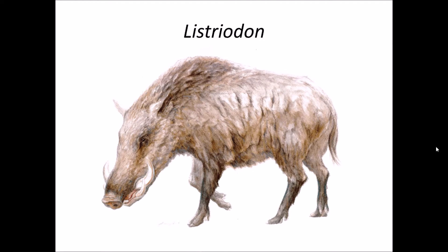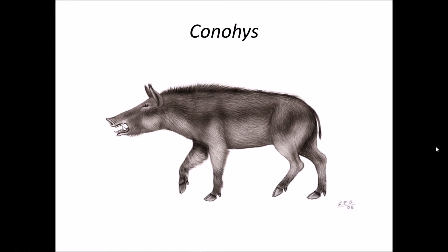Listerodon were pig-like creatures and hence we put them in the family Suidae. Suidae is a clade which includes pigs, boars, or wild pig-like creatures. Conohys also belongs to the family Suidae which includes pigs.